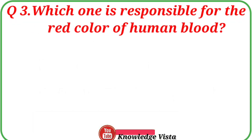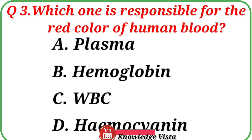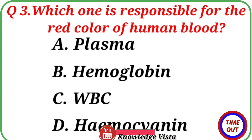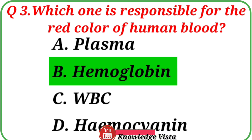Question number 3: Which one is responsible for the red color of human blood? Option A: Plasma. Option B: Hemoglobin. Option C: WBC. Option D: Hemocyanin. The correct answer is option B, Hemoglobin. Hemoglobin is a protein in your red blood cells that carries oxygen to your body's organs and tissues and transports carbon dioxide from your organs and tissues back to your lungs.